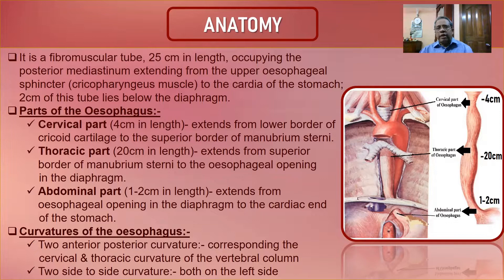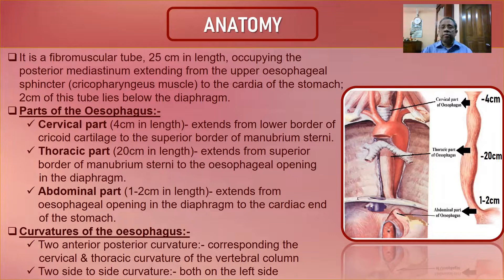The cervical part lies in the neck in front of the cervical vertebra — 4 cm in length, extending from the lower part of the cricoid cartilage to the superior border of the manubrium sterni. The thoracic part is about 20 cm, extending from the superior border of the manubrium sterni to the esophageal opening in the diaphragm. The abdominal part is 1–2 cm, extending from the esophageal opening to the cardiac end of the stomach.